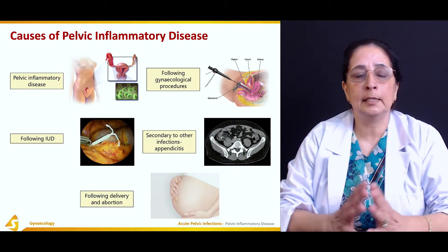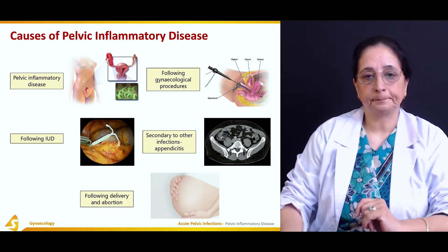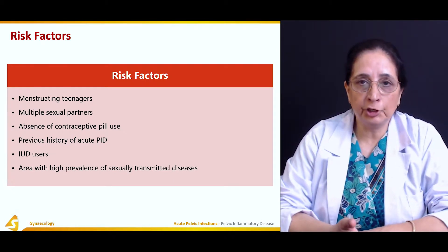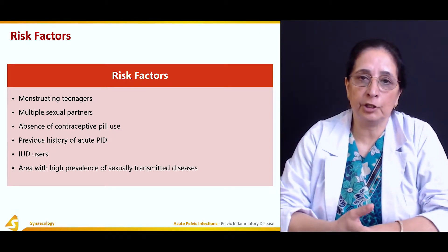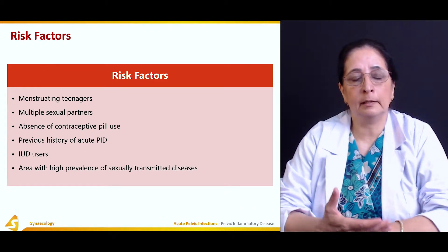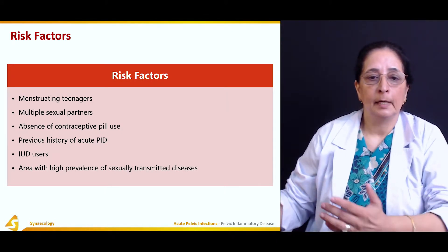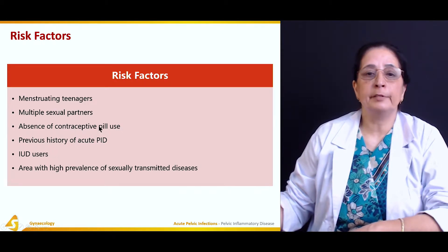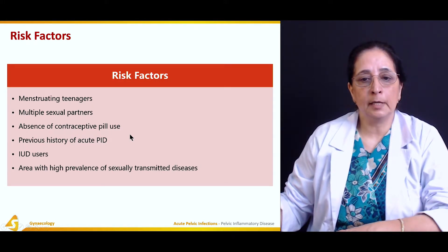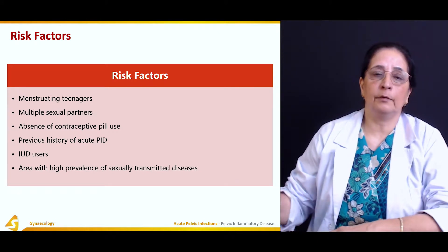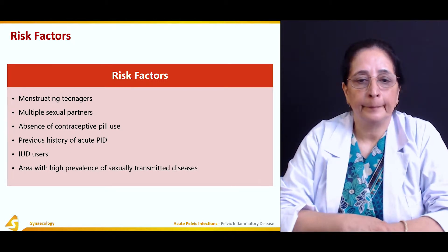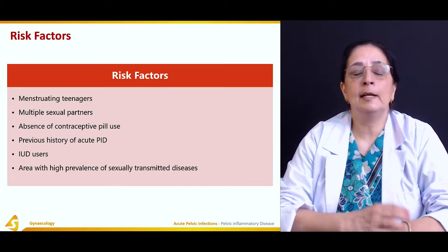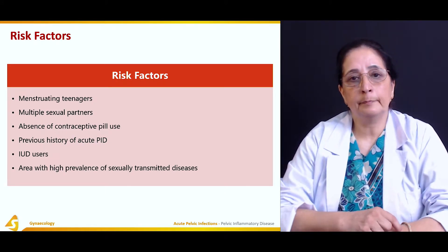Risk factors for pelvic inflammatory disease include menstruation, especially under unhygienic or unsanitary conditions. Multiple sexual partners can also lead to PID, as can the absence of contraceptive pill use. A previous history of PID can lead to recurrent PIDs. Intrauterine devices are also a risk factor, and living in an area with a high prevalence of sexually transmitted diseases can cause pelvic inflammatory disease.